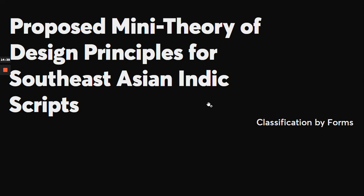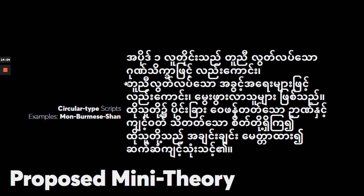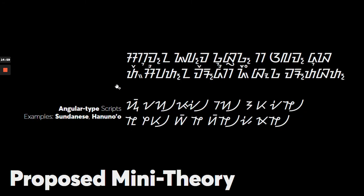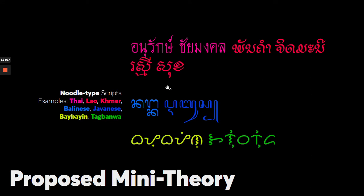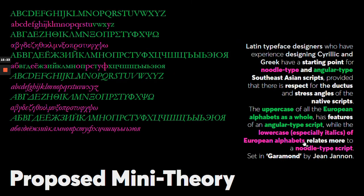There's a mini theory of design principles for Southeast Asian Indic scripts. The graphical types tend to be either circular — like Mon-Burmese script — angular, like Sundanese and Hanunoo, or noodle type, which many Southeast Asian scripts represent, like Thai, Lao, Khmer, Balinese, Javanese, Baybayin, and Tagbanwa. For Latin typeface designers, if you design Cyrillic and Greek, you actually have a starting point for noodle and angular Southeast Asian scripts — all you need to do is learn how to respect the ductus of the local scripts.